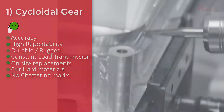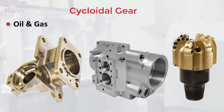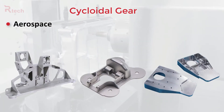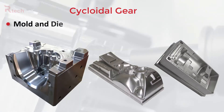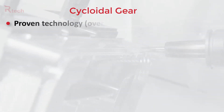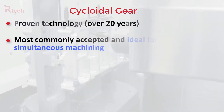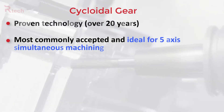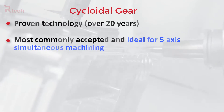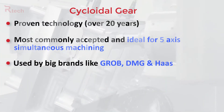This type of transmission system is accepted by many industries like oil and gas, medical, aerospace, molten dye, and semi-con, because it can machine a wide variety of materials. This technology has been around for over 20 years and has established itself as a reliable system. Cycloidal gears are used in European, high-end Japanese and American machines like Grubb, DMG, and Haas.